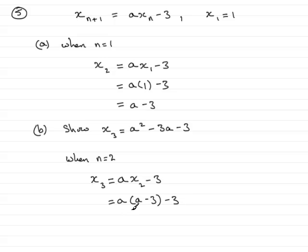All we need to do now is just expand the bracket, and we have a times a, which is a squared, then a times minus 3, which is minus 3a, and then the minus 3 on the end. And so we have x_3 is a squared minus 3a minus 3.